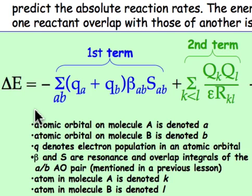First of all, what is it that's meant by this ΔE? Well, since we're dealing with perturbation theory, it means the change in energy that takes place at a very early part of the reaction pathway, when the orbitals from two reactants begin to interact with one another.